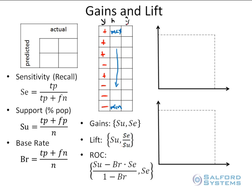Now I want to see the performance in terms of the direct marketing campaign. Starting from the top, I pick a number of records corresponding to 20% of the dataset. If I have 10,000 observations, I pick 2,000 observations with the highest scores. Recall that sensitivity or recall is defined as the number of true positives divided by the sum of true positives and false negatives.